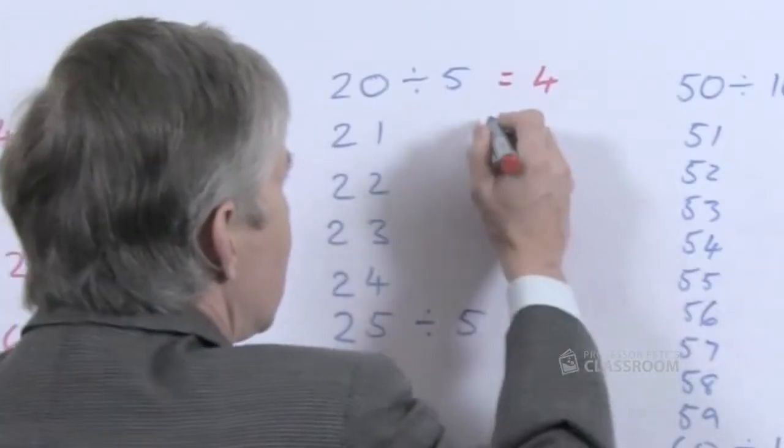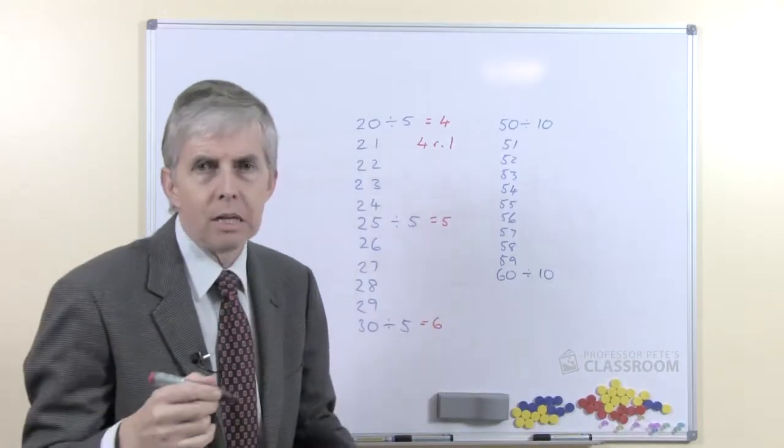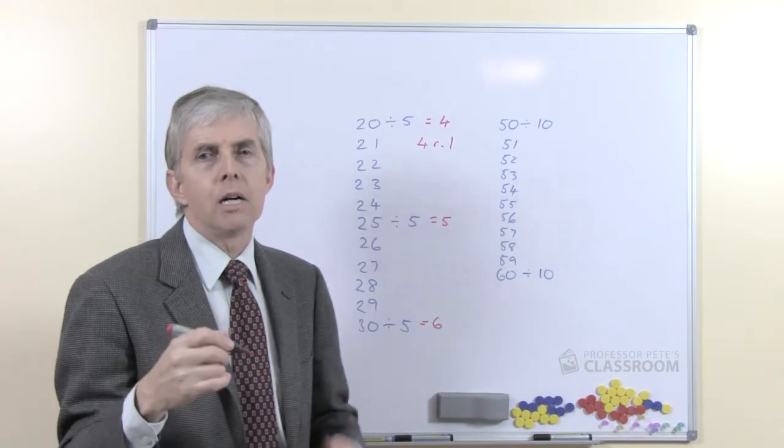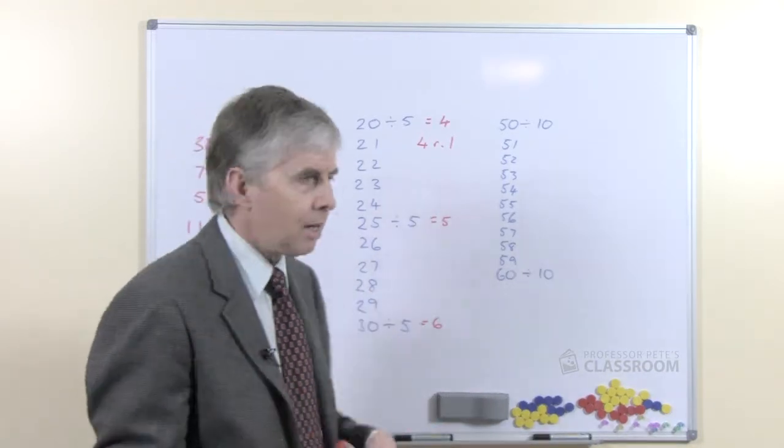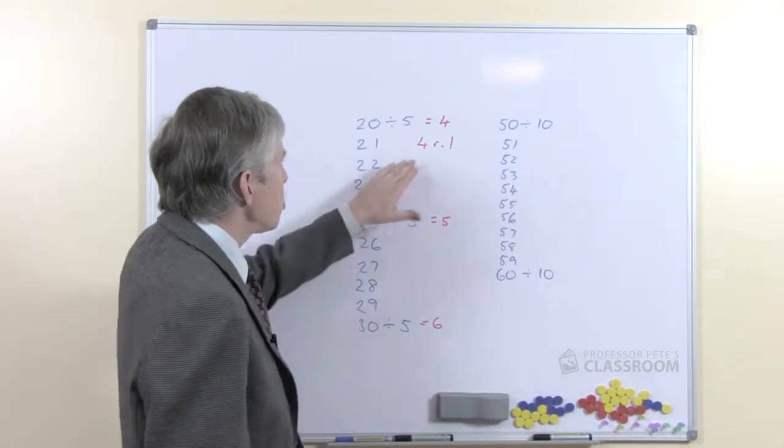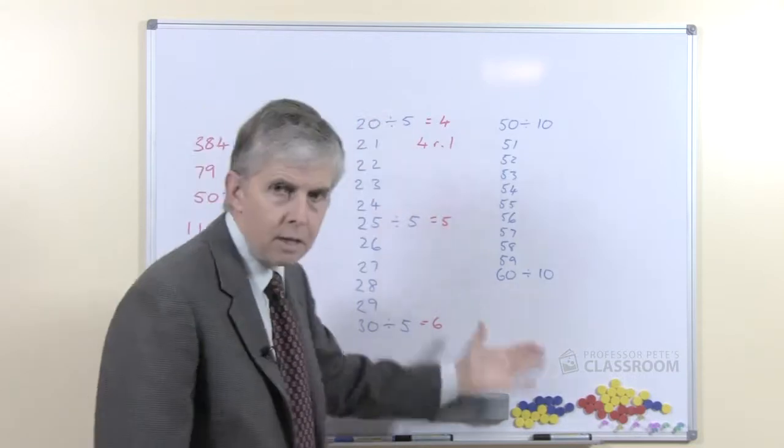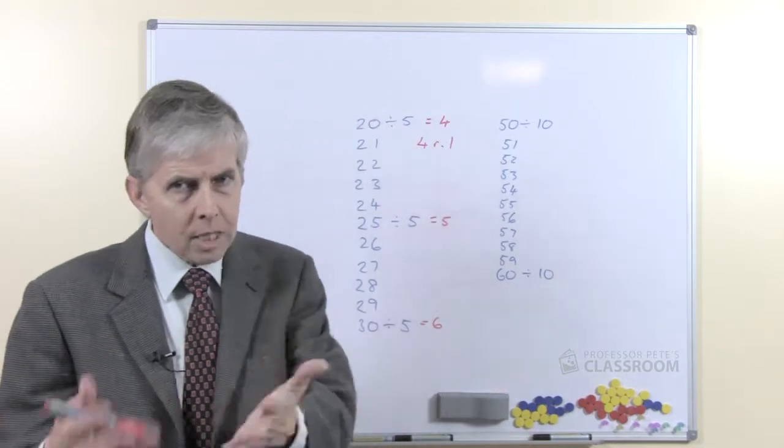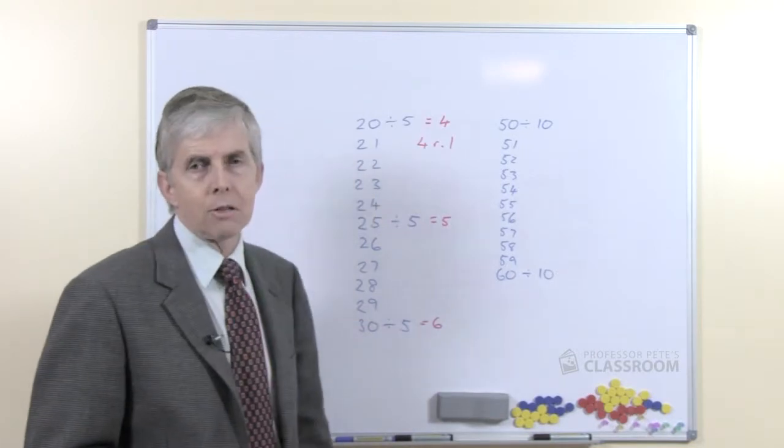I don't particularly care how students record that. I mean you want consistency in your classroom but whether you write a capital R or a small one or REM, it doesn't really matter. And then of course the next will be 4 remainder 2, 4 remainder 3, 4 remainder 4, and then we get to 5. You know that, I know that, but we want our students to see the patterns that are involved here.